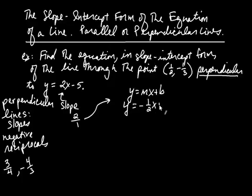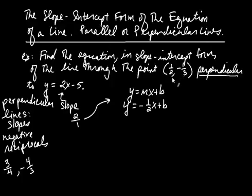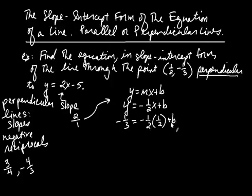So our equation so far is y equals negative one-half times x plus b. I used the slope of the other line to get my slope because my line is perpendicular to it. Now we want to find b by replacing x with one-half and y with negative one-third, since our line goes through that point. So: negative one-third equals negative one-fourth plus b.